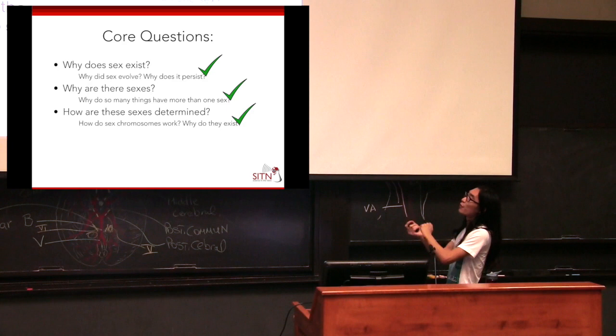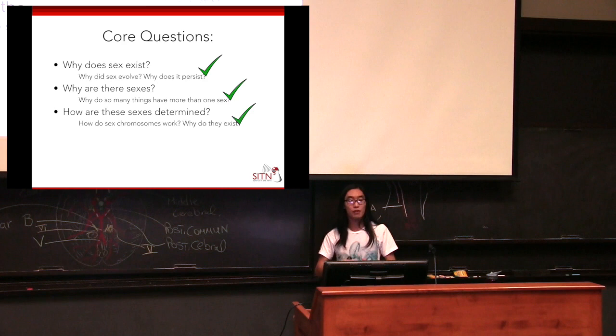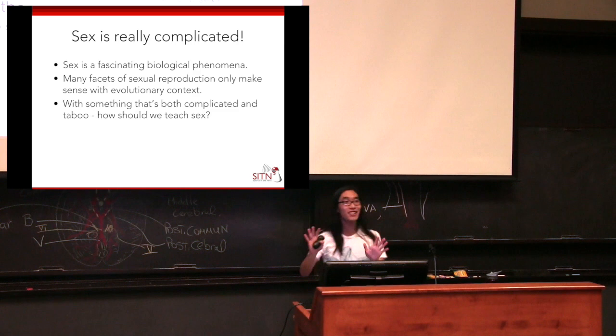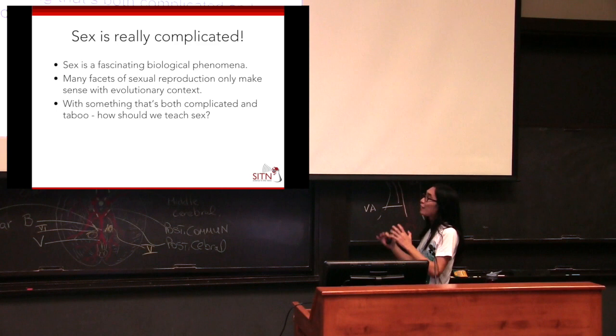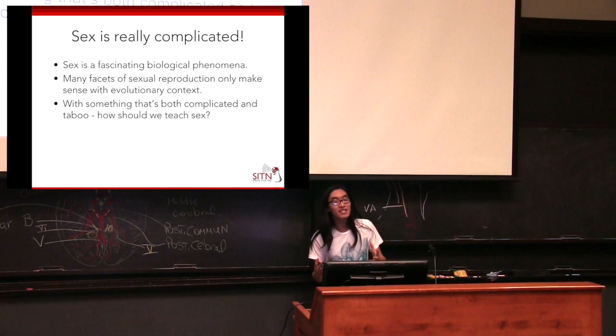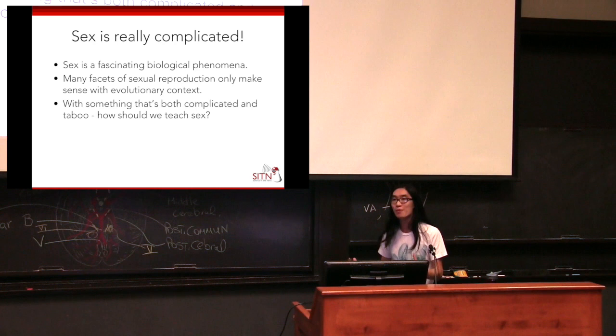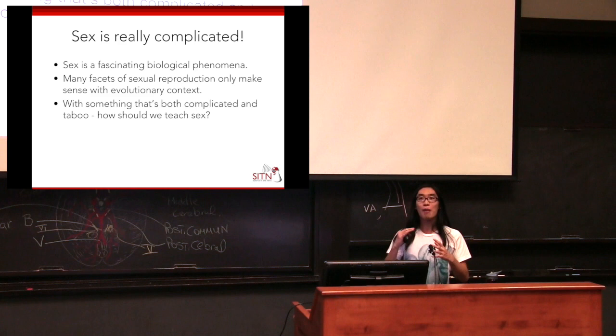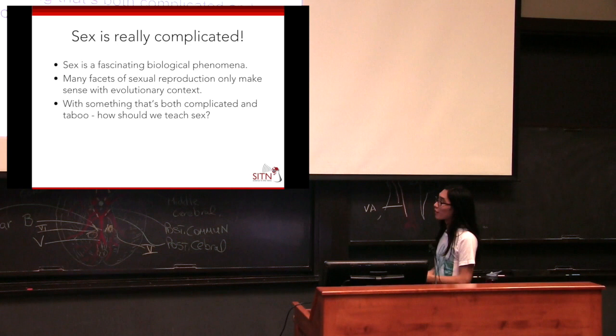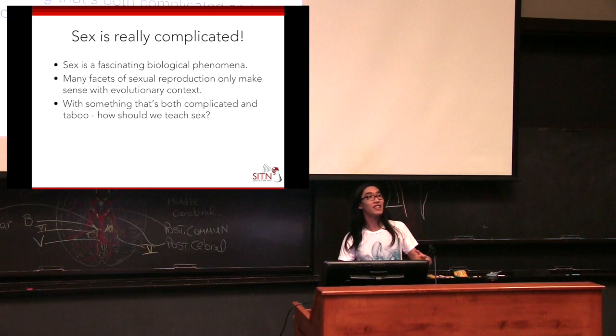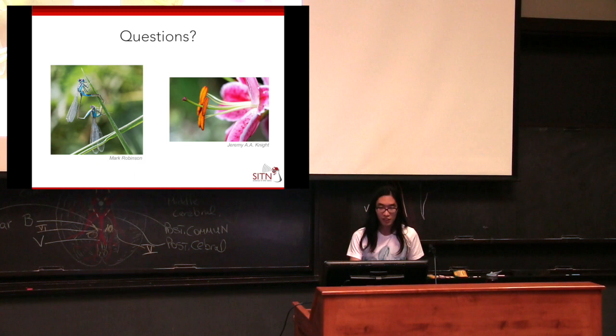Finally we've reached the end of our three questions. We've answered why does sex exist, why are there different sexes, and in some cases how sex is determined. The main takeaway is that sex is really complicated, but while it is complicated, it's also fascinating. It's an interesting system that causes very interesting evolutionary consequences and allows for the application of lots of evolutionary thinking. And so to segue into our next talk, it's non-trivial to consider how we should teach something that's both complicated and admittedly somewhat taboo in society — what sex is, how sex works, and what makes sex interesting.